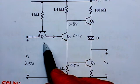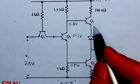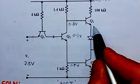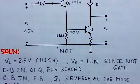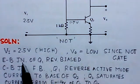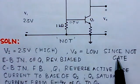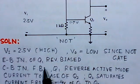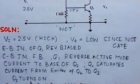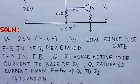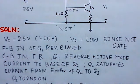So what we observe is: Q1 is in reverse active mode, Q2 and Q3 are in saturation, and Q4 is in cut-off mode. With VI = 2.5 volts (high input), V0 should be low since it is a NOT gate. The emitter-base junction of Q1 is reverse biased, so the collector-base junction is forward biased — reverse active mode. Current flows to the base of Q2, saturating it; emitter current of Q2 saturates Q3. The Q2 collector voltage is 0.8 volts — not enough to turn on Q4, so Q4 is in cut-off. Therefore, option B is the correct answer.